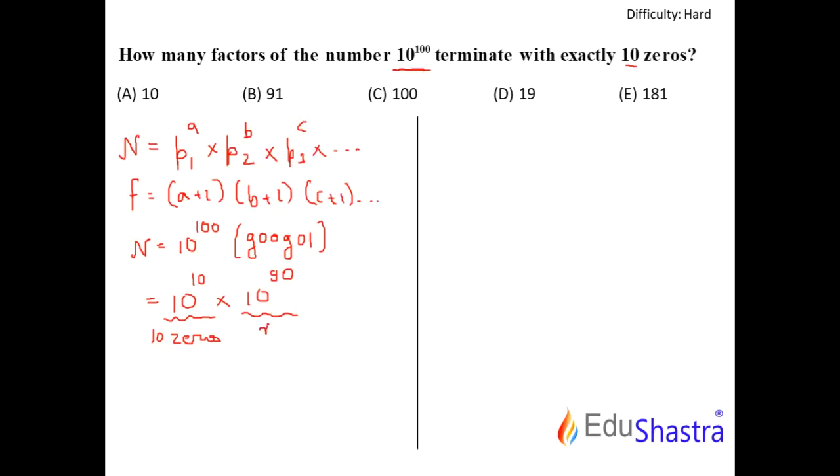And this is another number in the multiplication, which let's say is n1. So for this number n1, as many factors I can figure out, those many factors of the number Googol will end with, be careful, 10 zeros, not exactly 10 zeros, right? There's a very big distinction here to understand.